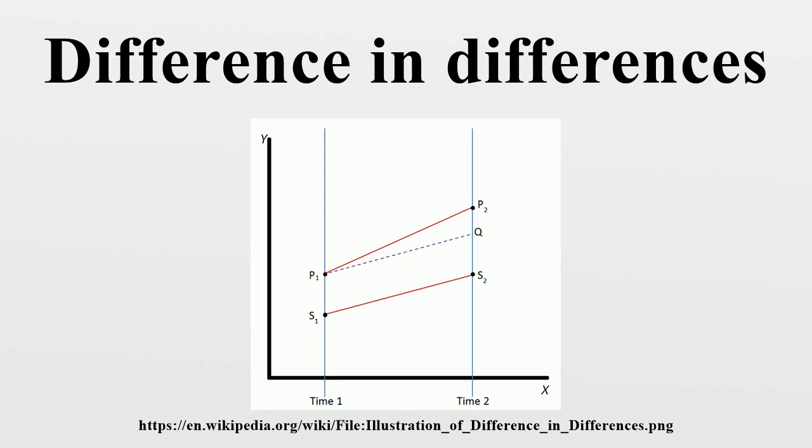DiD therefore calculates the normal difference in the outcome variable between the two groups, represented by the dotted line Q. The treatment effect is the difference between the observed outcome and the normal outcome.